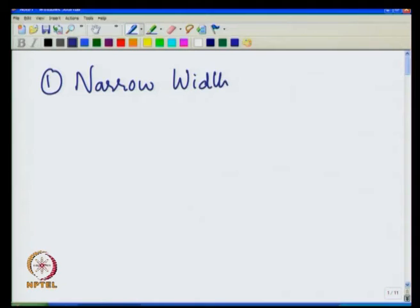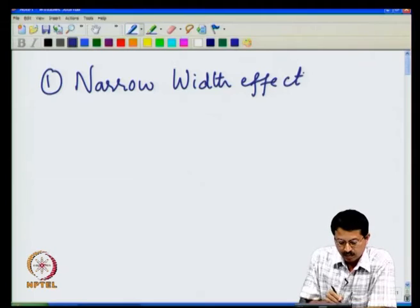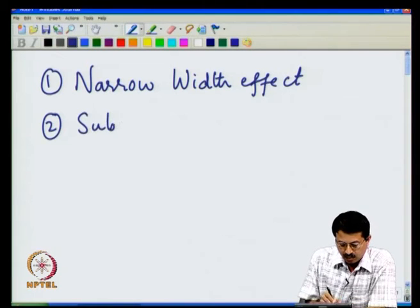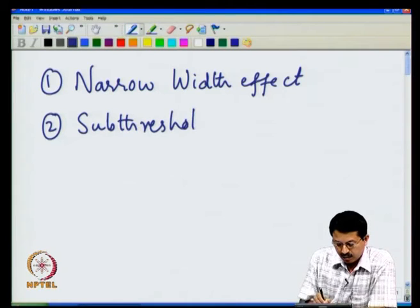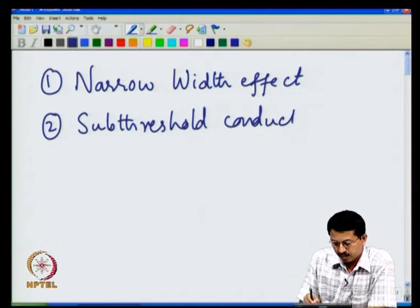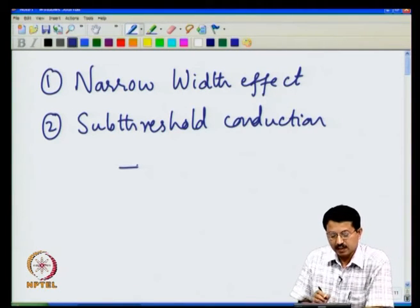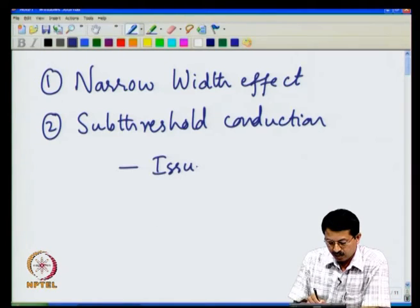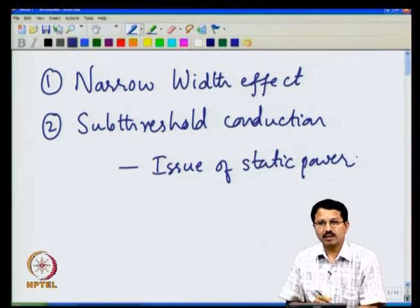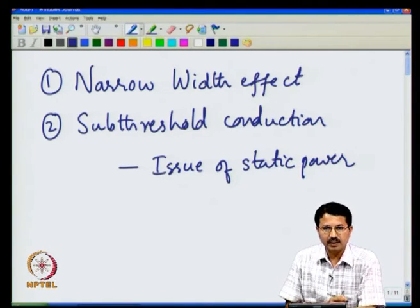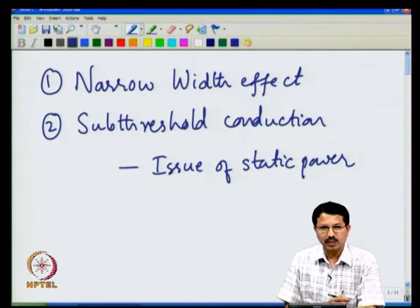Today we will look at two important characteristics in the context of nanotransistors: one is what is called the narrow width effect, and the other important aspect is what we call sub-threshold conduction. This in turn will lead us to the discussion of static power in today's state-of-the-art CMOS technology, which has really surfaced as one of the very important challenges to deal with.